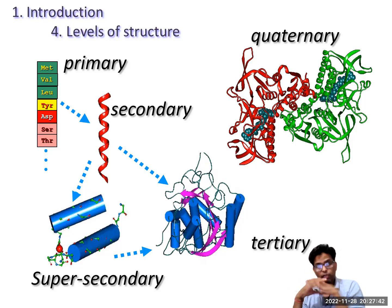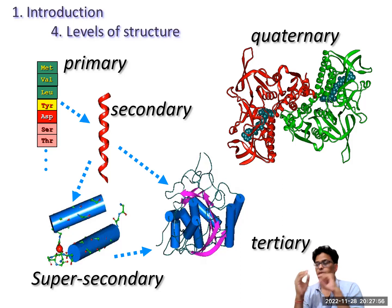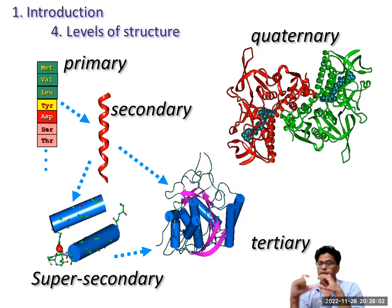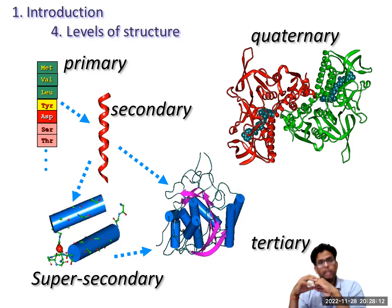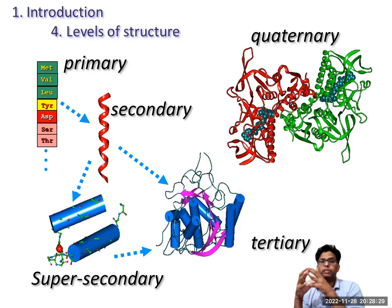Tertiary structure involves additional bonds beyond hydrogen bonds. For example, cysteine amino acids can form disulfide bonds — suppose the 4th and 16th amino acid form a disulfide bond — making the protein more stable. So: only peptide bonds give primary structure; adding hydrogen bonds gives secondary structure; adding disulfide bonds and other bonds gives tertiary structure. If two or three tertiary structures interact with each other, that is called quaternary structure.